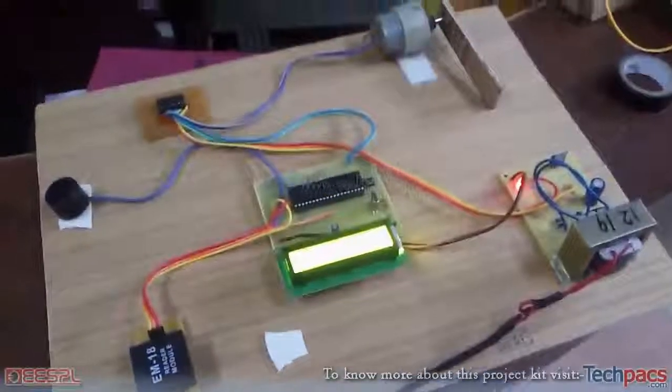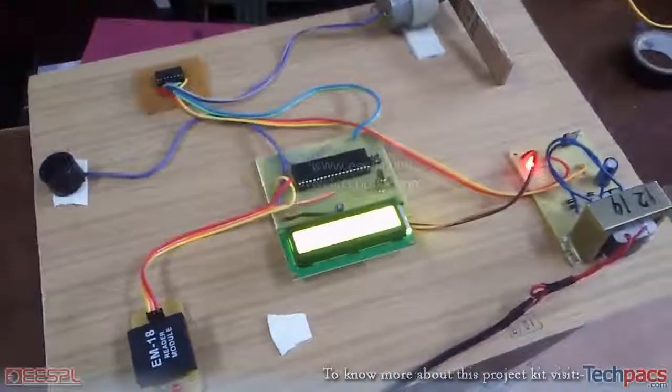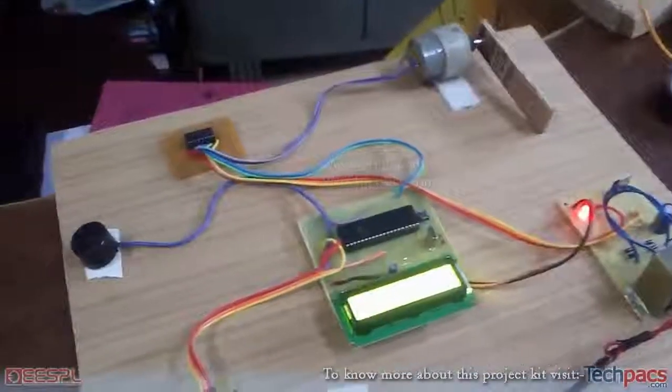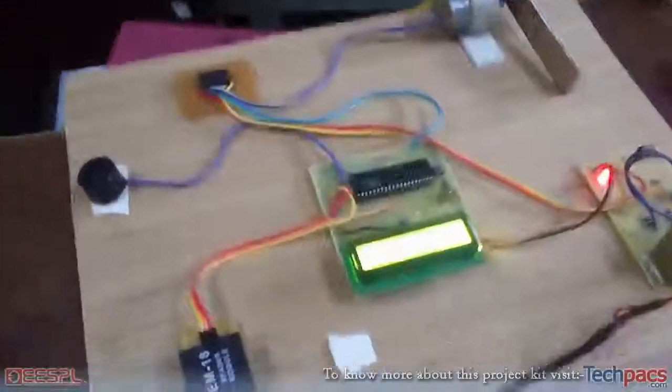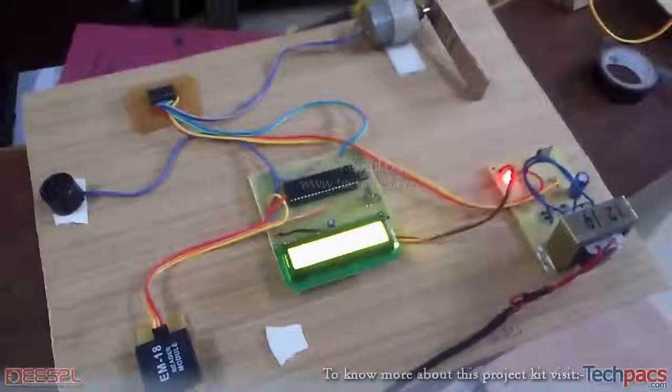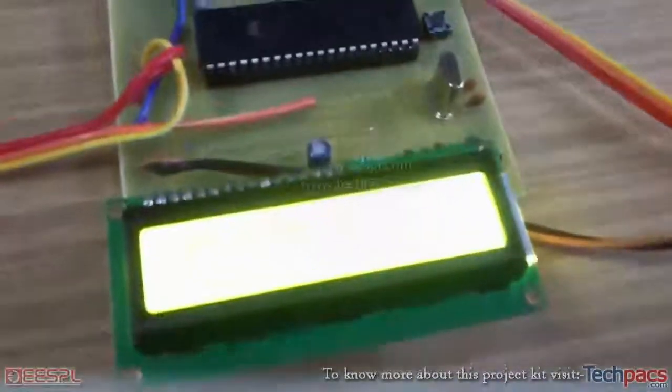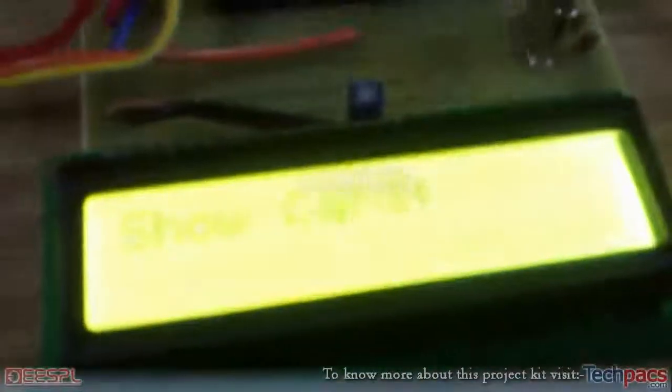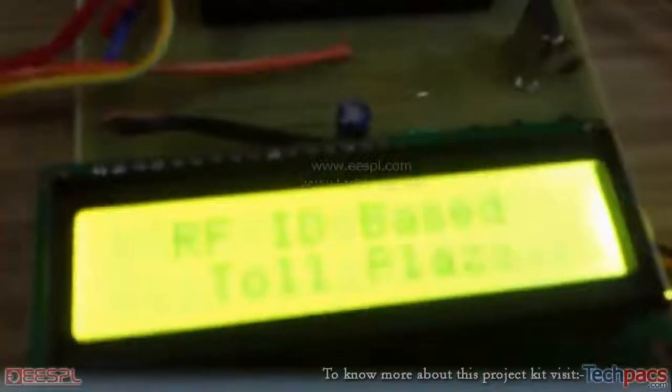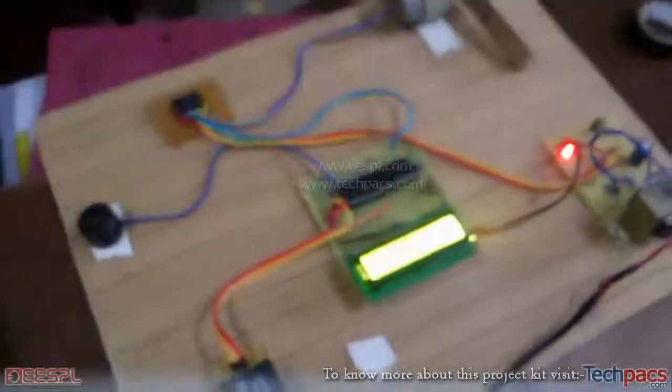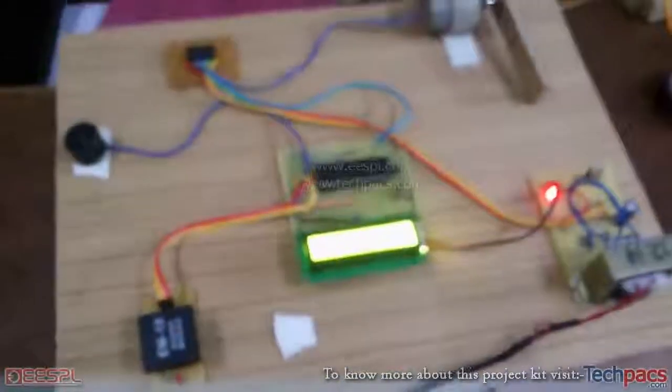Hello friends, this is Jaskirat from EMP Project Unit of EESPL. I'm going to demonstrate your project today. It's based on RFID, that is RFID-based automated toll plaza. So what this project does is it has an RFID reader.